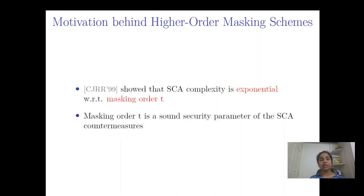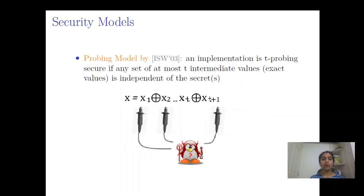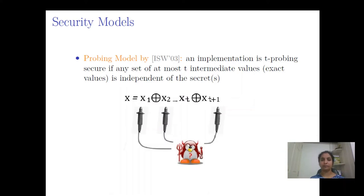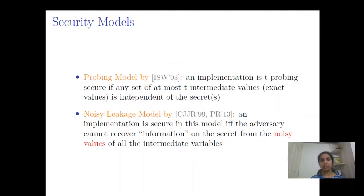We will discuss security models — how we can model the leakage obtained by the adversary. The probing leakage model was initiated by Ishai, Sahai, and Wagner in Crypto 2003. As per this model, the leakage is modeled as the exact values of T intermediate variables. If any set of T intermediate variables is independent of the secret, then the masked implementation is probing secure. In the noisy leakage model, the adversary can obtain noisy values of all intermediate variables, and if the adversary obtains no information about the secret, the scheme is secure in the noisy leakage model.